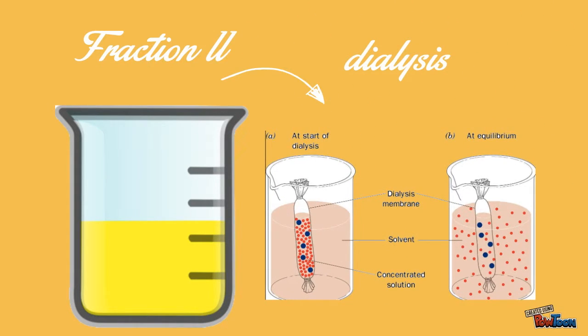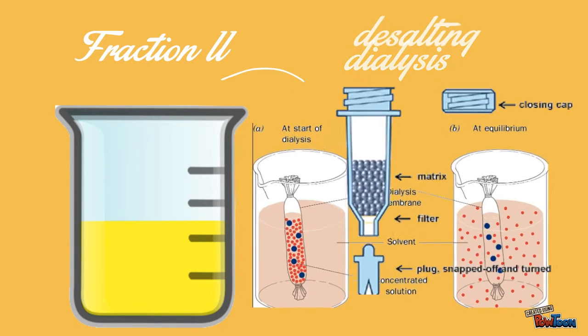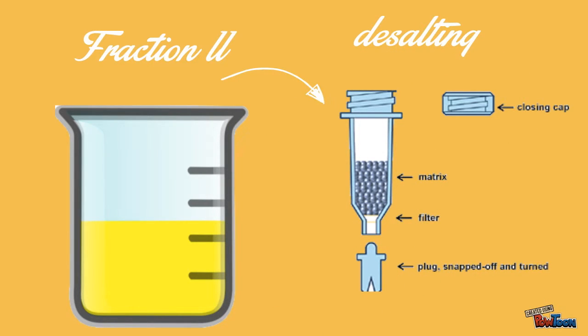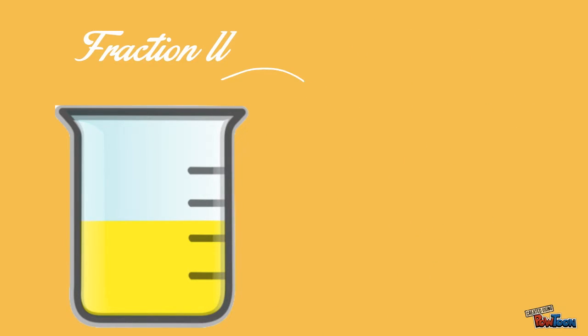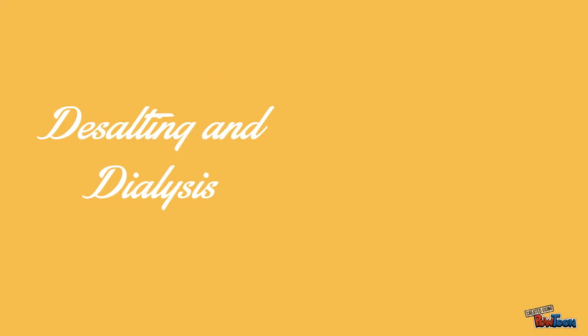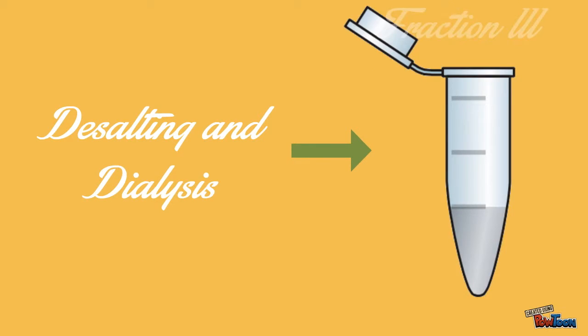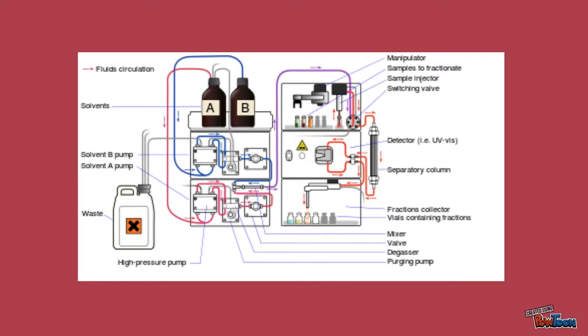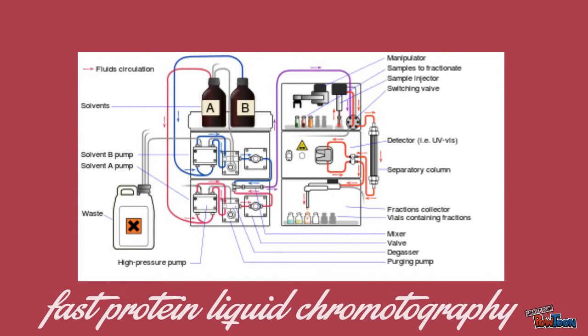With fraction two, we are going to be dialyzing and desalting it. We dialyze the solution to separate the smaller contaminants from the protein molecule, which is a larger molecule. We need to desalt the solution to rid it of excess ammonium sulfate. We will collect the run-through from the desalting column as fraction three.